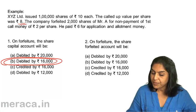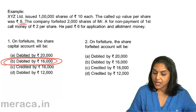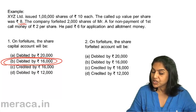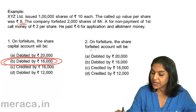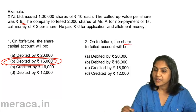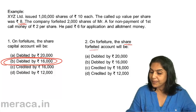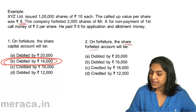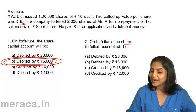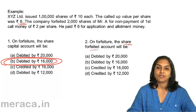What about the other part of the question — on forfeiture, the share forfeited account will be: A, debited by Rs 20,000; B, debited by Rs 16,000; C, credited by Rs 16,000; D, credited by Rs 12,000.